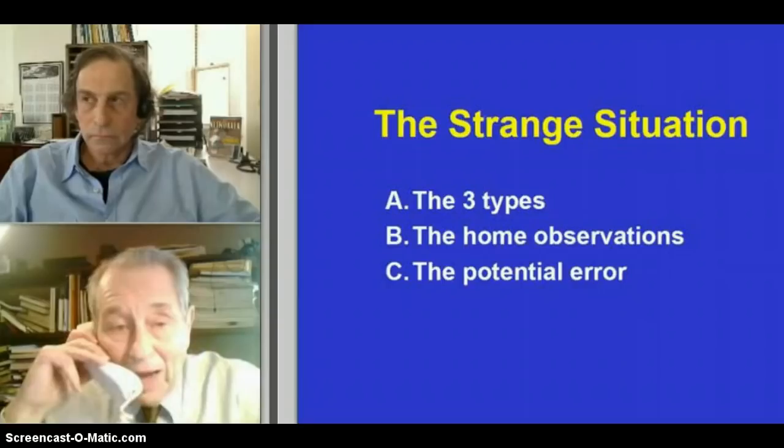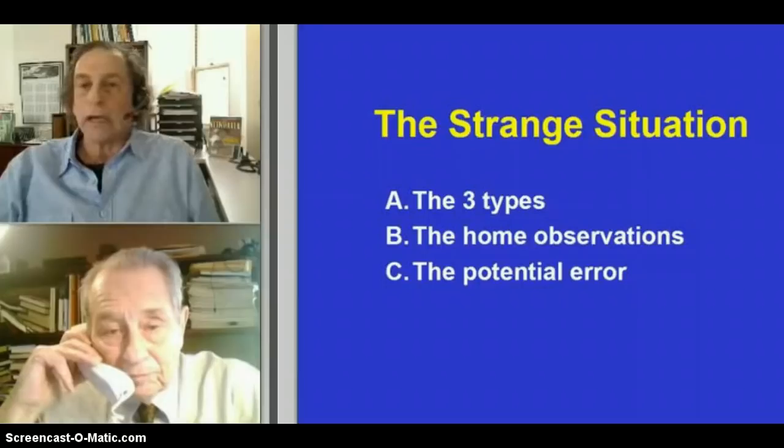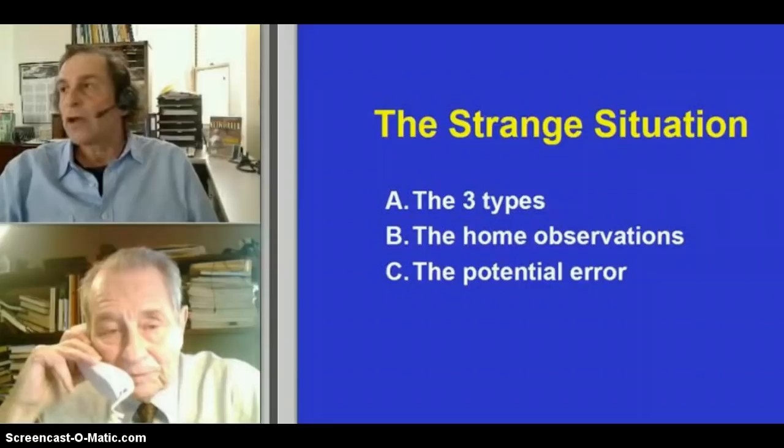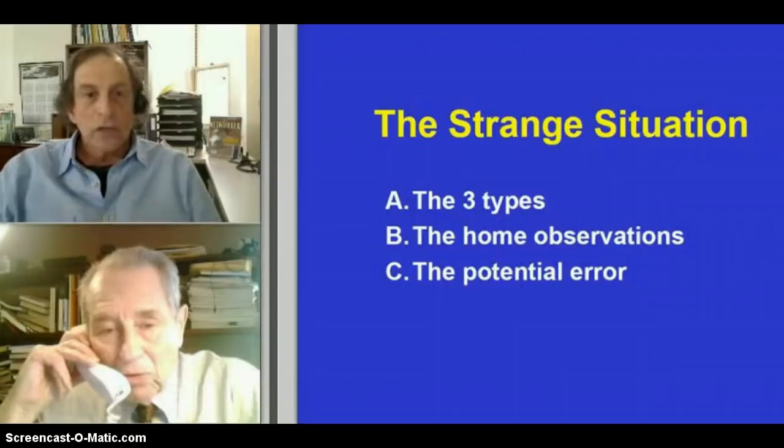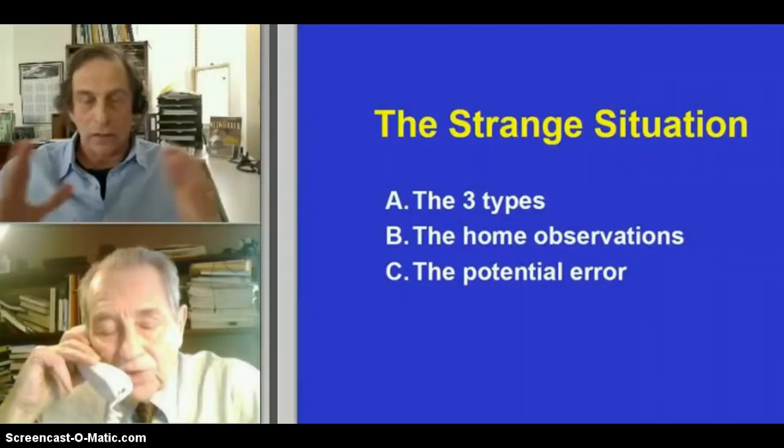So in all the years that - so Mary Ainsworth did her work, was it 30 years ago? In the 70s, yes. So part of your quarrel with attachment theory is as a scientist, you don't trust the measurement of the strange situation because you think it's a confounding of temperament and of what the attachment theory people are saying.